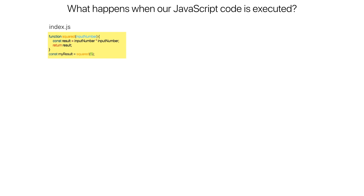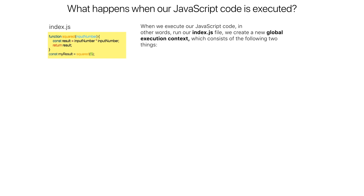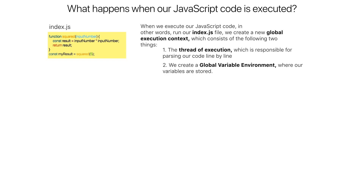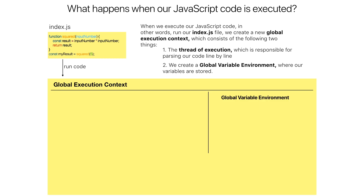We'll go through this example one more time and add another piece to the puzzle. When we execute our JavaScript code we create a new global execution context consisting of two things: one, the thread of execution, which is responsible for parsing our code line by line; and two, a global variable environment where our variables are stored.